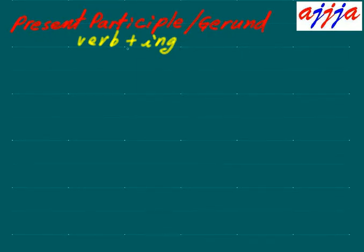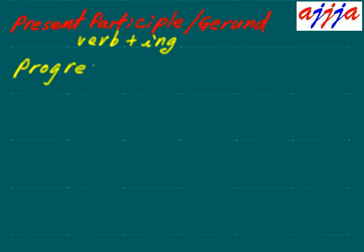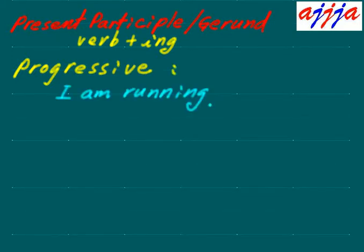The difference between those two actually depends on how you use this one. So the first one — let's say the progressive form. Progressive means something going on right now, or in the past, something was going on. For example: 'I am running' or 'he is working hard,' something like that.